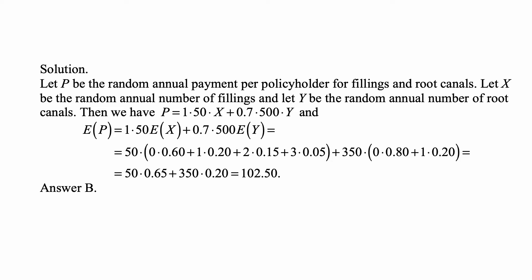That's 50 times (0 × 0.60 + 1 × 0.20 + 2 × 0.15 + 3 × 0.05) for the expected value of X, plus 350 — because 0.7 times 500 is 350 — times (0 × 0.80 + 1 × 0.20). The probability of having to pay for a root canal is 0.20, and the number of root canals can be either 0 or 1.